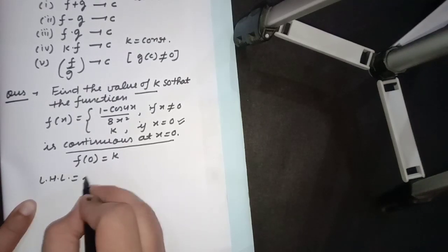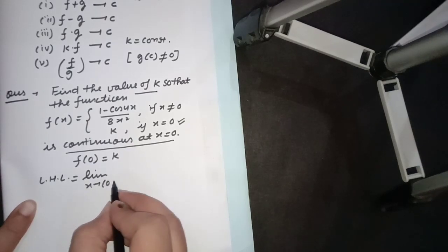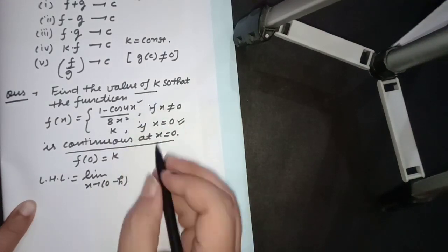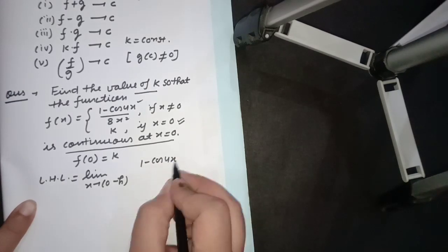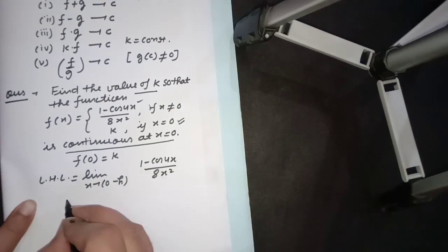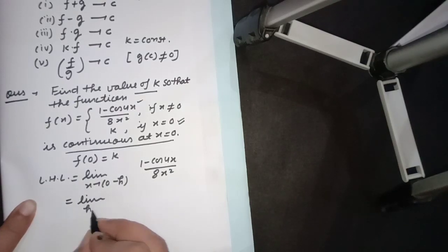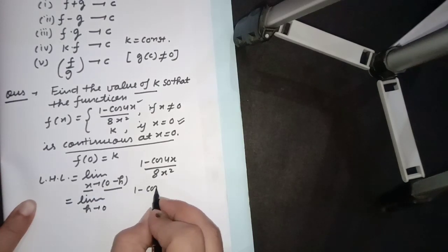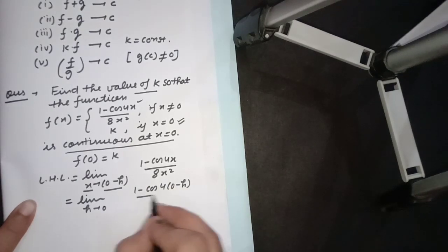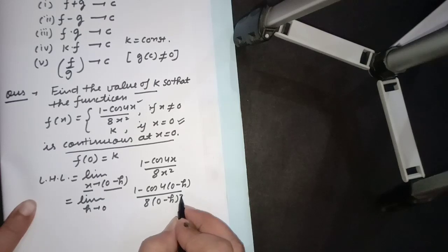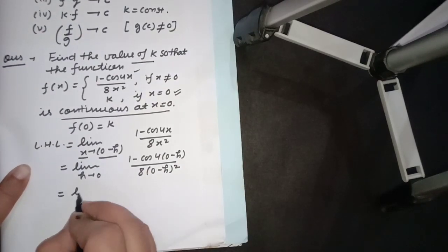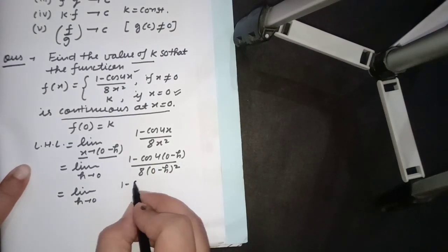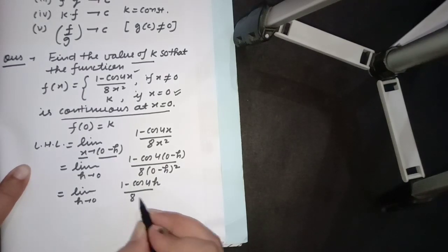The left hand limit equals limit as h tends to 0 with x replaced by (0 minus h), giving (1 minus cos 4(0 minus h)) upon 8(0 minus h) squared. Since cos(minus theta) = cos theta, this simplifies to (1 minus cos 4h) upon 8h squared. Putting h = 0 gives 0/0 form. We can use several methods — L'Hospital's Rule, trigonometric substitutions, or the standard limit formula. Using the identity 1 minus cos theta = 2 sin squared(theta/2), we get 1 minus cos 4h = 2 sin squared 2h, giving 2 sin squared 2h upon 8h squared.